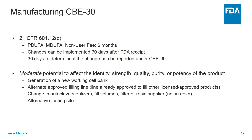A CBE30 submission contains a proposed change that has a moderate potential to affect product safety. Thirty days after submission, the applicant may implement the proposed changes unless otherwise notified by the FDA. We use those first 30 days to ensure the change would not substantially impact product safety. If there is a concern, we'll notify the applicant to not implement the change, and we may upgrade the submission to a PAS. Full review of a CBE30 is completed in six months. Changes with a moderate potential to affect product safety include a new working cell bank, alternate approved filling lines, moderate changes to procedures or equipment, and alternate testing sites.